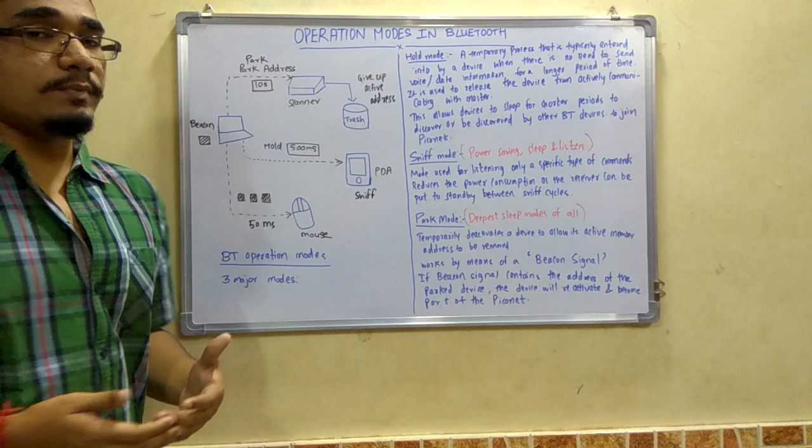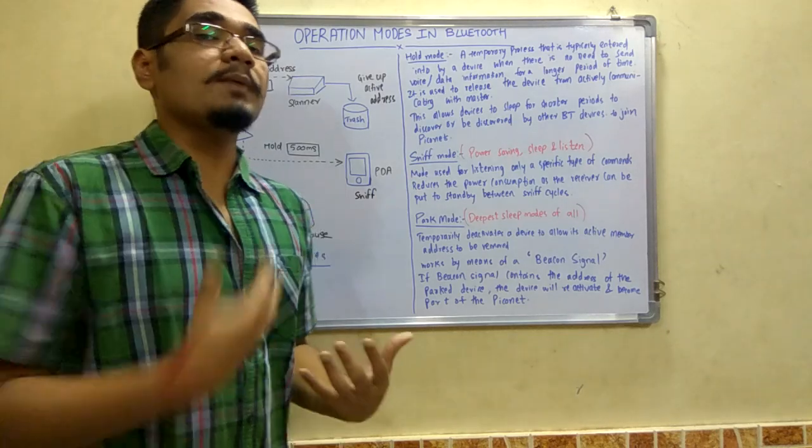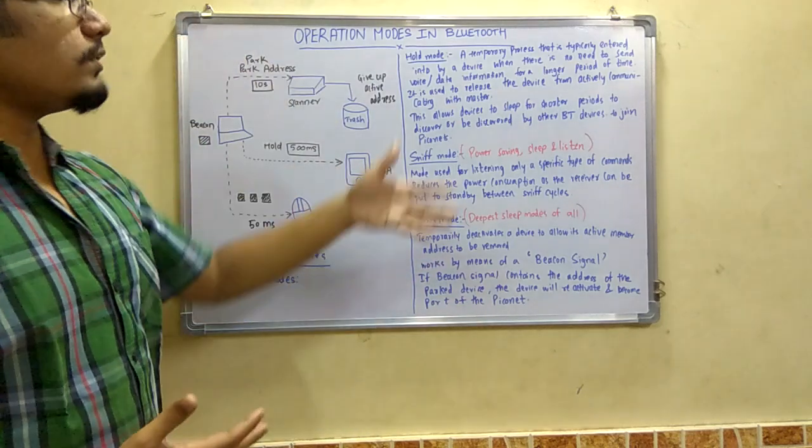After the work of the scanner is over, it will give up those active addresses and dump them into a trash memory so that other devices can also utilize the same operation mode. This is the operation modes of Bluetooth in detail.